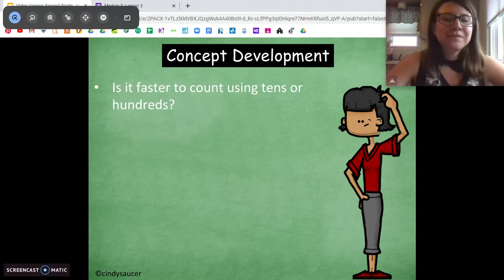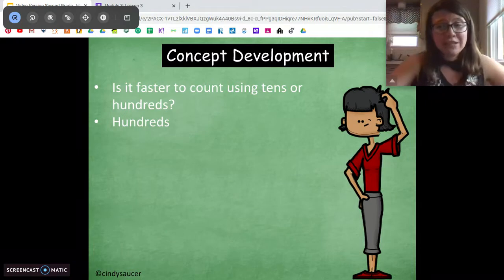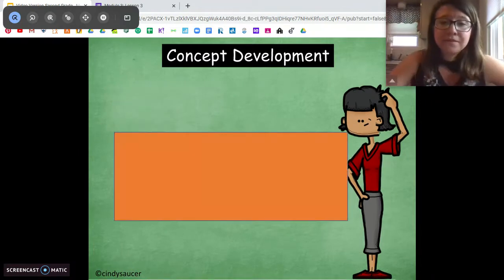All right, try this one. Oh, is it faster to count using tens or hundreds? Hundreds, right? Because it's a bigger number, especially when we're counting up to 1,000. To get to that bigger number, it's easier to count by hundreds.